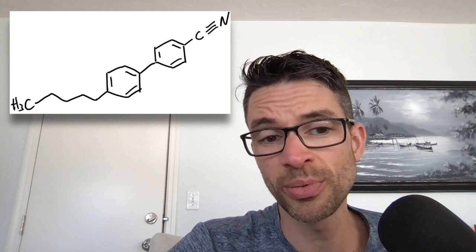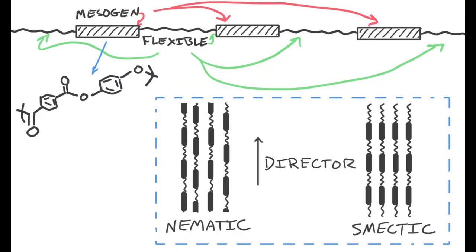And when you incorporate this kind of mesogen into a polymer, you can make something called a liquid crystalline polymer. You can also make something called a liquid crystalline elastomer. And a liquid crystalline elastomer is a liquid crystalline polymer that is cross-linked in its stretched state. So if you stretch out these materials into the nematic phase, for example, and you lock that into place by cross-linking, then if you heat this material up, the crystalline domains will melt and you'll get a contraction of the structure, just like a muscle.